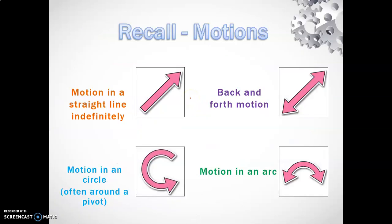Last week we were looking at types of motion. Motion in a straight line is linear. Back and forth motion is reciprocating. Motion in a circle is rotary motion, and motion in an arc is oscillating.